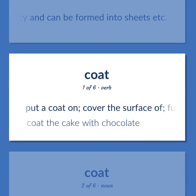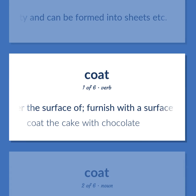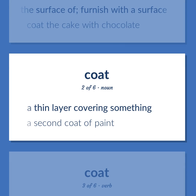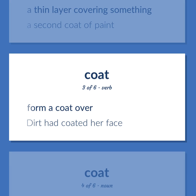Coat (verb): To put a coat on; cover the surface of; furnish with a surface. Example: Coat the cake with chocolate. A thin layer covering something. Example: A second coat of paint. Also: to form a coat over — dirt had coated her face.